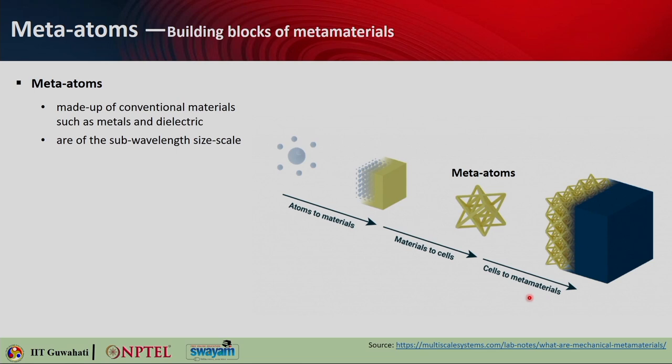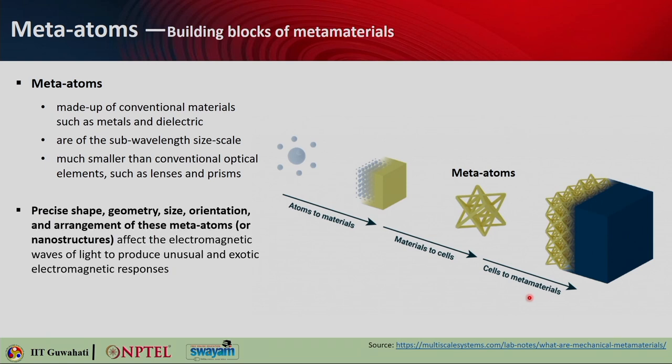These meta atoms are sub-wavelength in size — much smaller than conventional optical elements such as lenses and prisms. The precise shape, geometry, size, orientation, and arrangement of these meta atoms or nanostructures basically affect the electromagnetic properties of light and give out unusual and exotic responses.